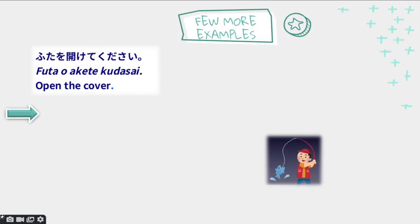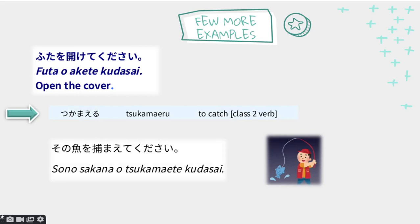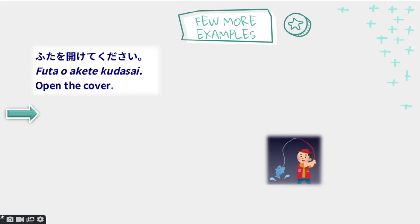Here are a few more examples. Futa wo akete kudasai — please open the cover. Futa is cover, akeru means to open. In the te form it becomes akete, and you add kudasai: please open the cover.